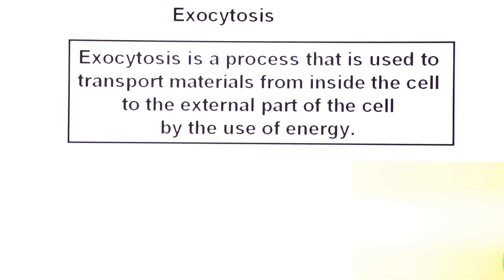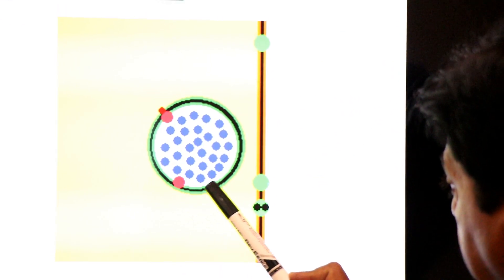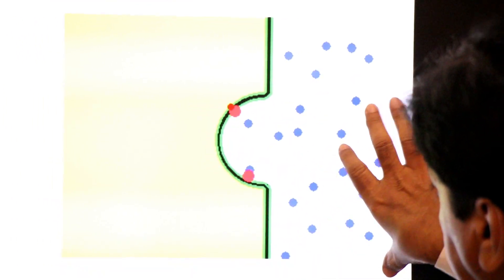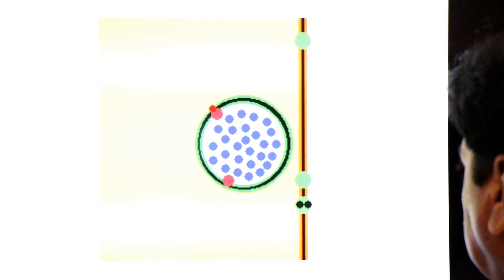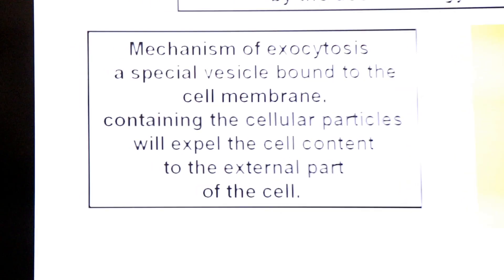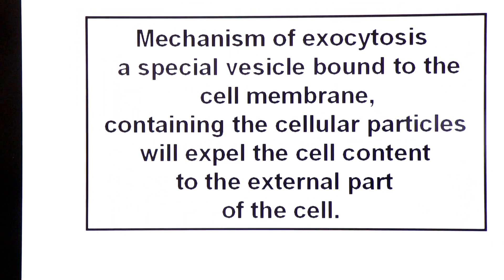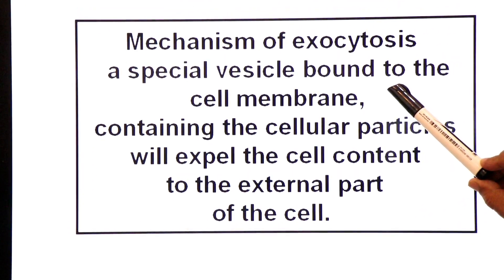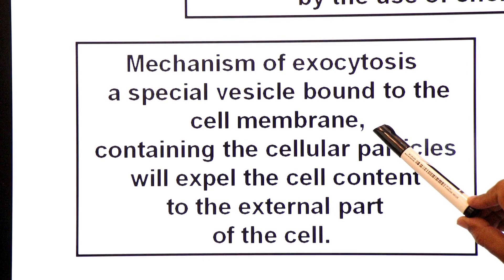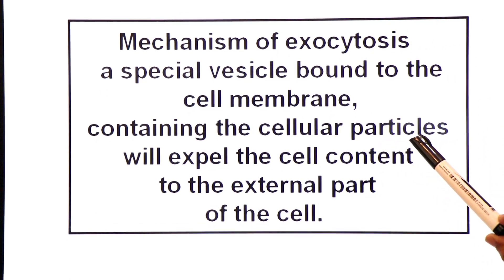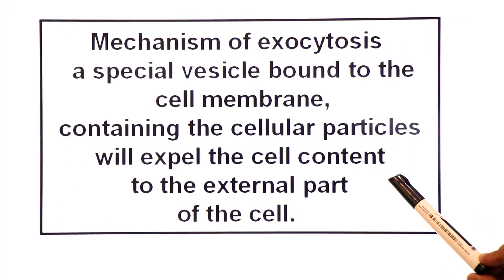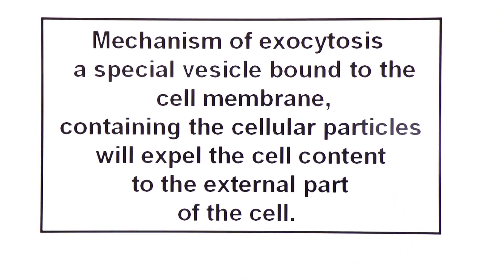Exocytosis is also an active transport process. It is the reverse of endocytosis. The mechanism of exocytosis: a special vesicle bound to the cell membrane, containing cellular particles, expels the cell content to the external part of the cell. The vesicle fuses with the cell membrane and discharges its material outside.